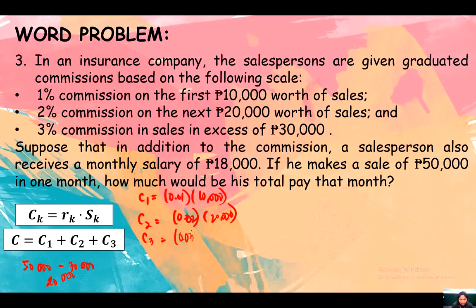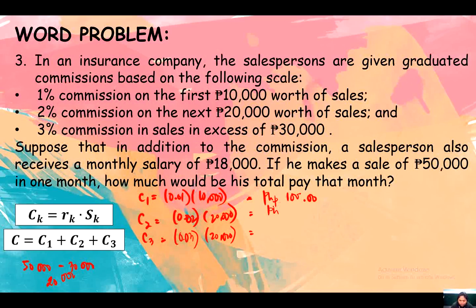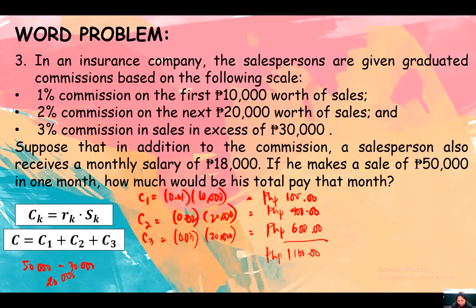Commission 3 is 3%, so 0.03 times 20,000 — this is the excess from the sale worth of 50,000. Now let's get the products: 0.01 times 10,000 equals 100 pesos. 0.02 times 20,000 equals 400 pesos. Adding them: 100 plus 400 is 500, plus 600 equals 1,100 pesos total commission.